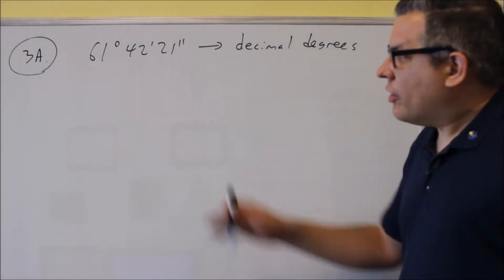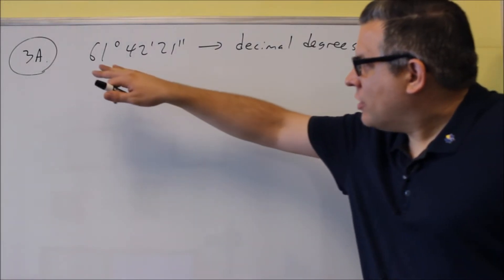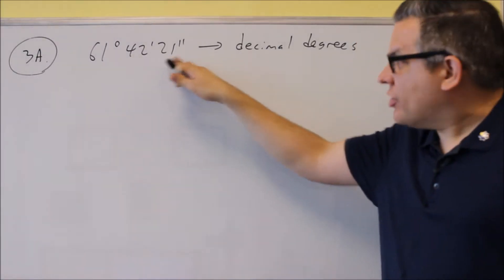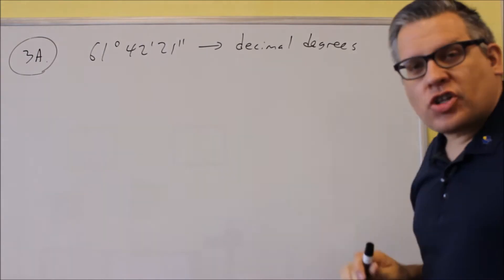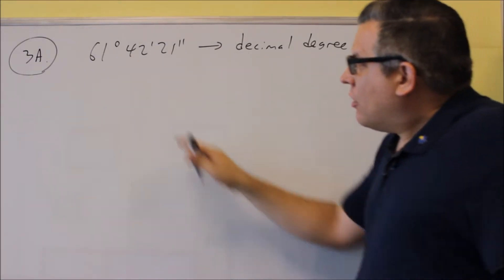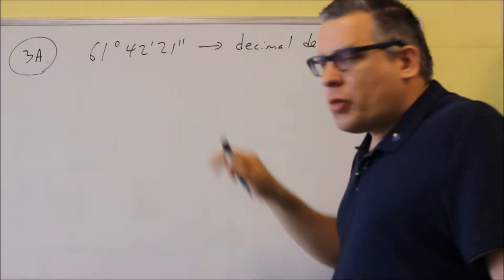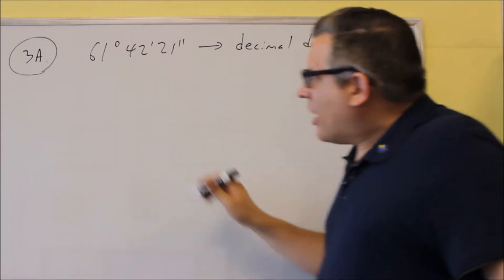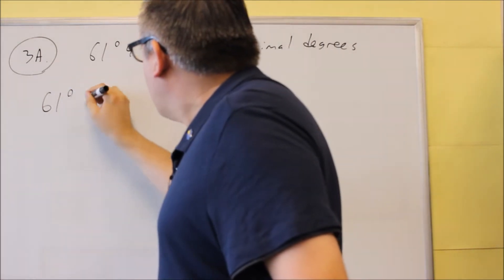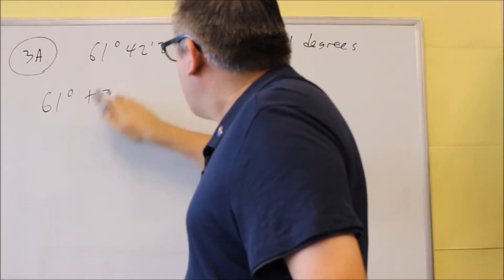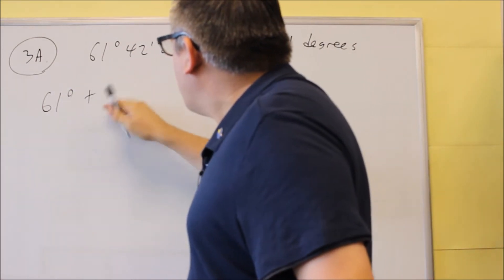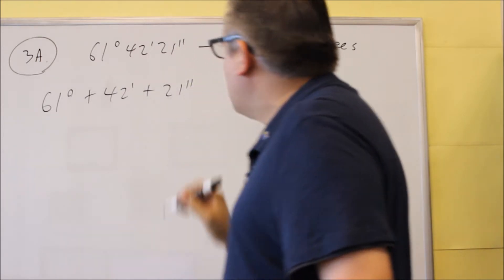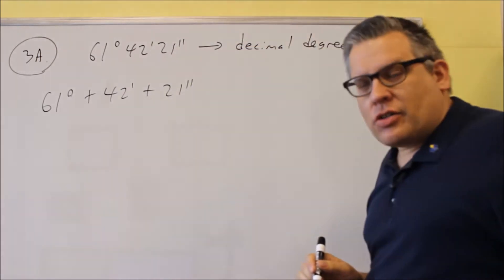For 3a, they want us to convert degrees, minutes, seconds into all decimal degrees. First, what we want to do is think of this as 61 degrees plus 42 minutes plus 21 seconds.